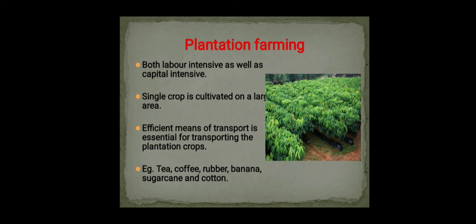Plantation farming is a part of commercial farming wherein a single crop is grown in a straight line. It is both capital-intensive and labor-intensive. Efficient means of transport is essential for transporting plantation crops — sugarcane is a best example due to the length of the cane — along with tea, coffee, rubber, banana, and cotton.